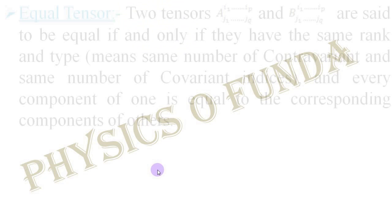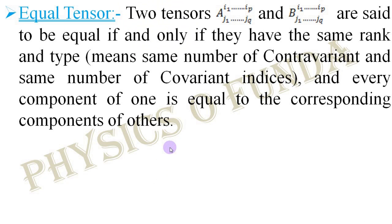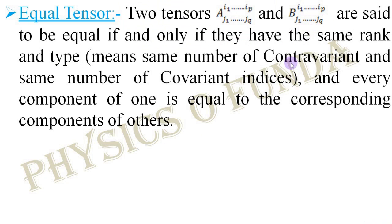Let us first see what is an equal tensor. If we consider two tensors A and B, if these two tensors are to be equal, then they should have the same rank and type. That means the number of contravariant indices and the covariant indices in these two tensors should be the same. Also, the corresponding components should be equal.